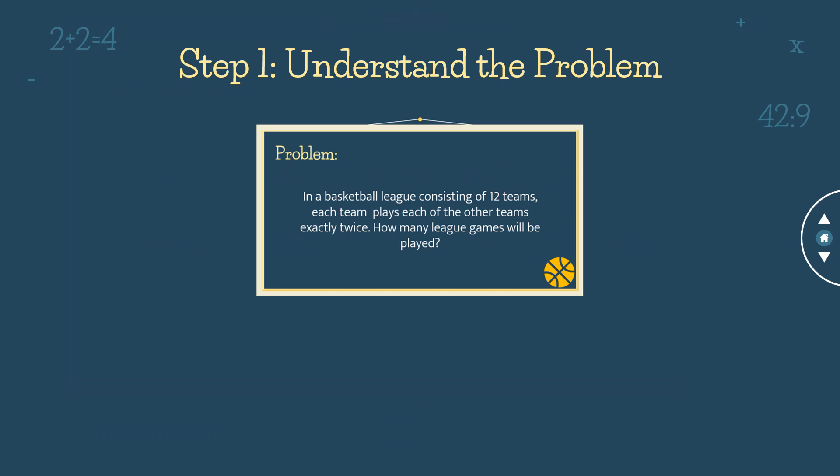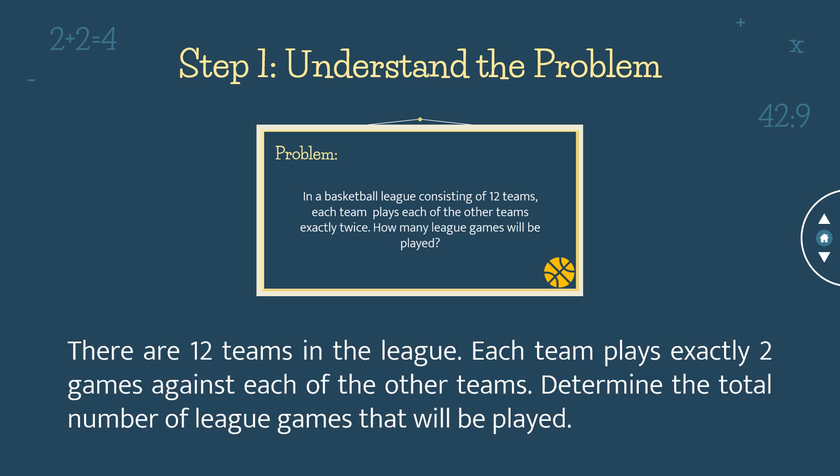To solve this problem, the first step is to understand the problem. In order to understand it, you need to restate the problem in your own words — it can be in English or in Filipino. The restated problem is: there are 12 teams in the league; each team plays exactly two games against each of the other teams; determine the total number of league games that will be played. The second statement is much easier and simpler to understand compared to the first one.